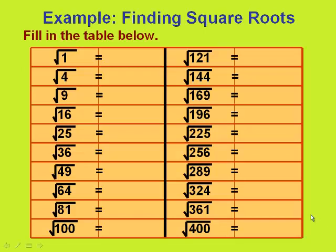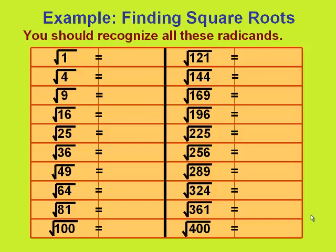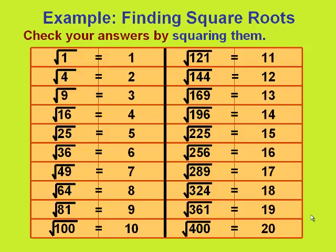Take time to fill in the table below, remembering that when you find a square root, you are thinking what times itself equals the radicand, or the number inside the square root. Look carefully at these radicands — you should recognize them. They are all perfect squares. Once you have your answers, it is easy to check them by simply squaring the answers to see if you come up with the numbers inside the square roots.